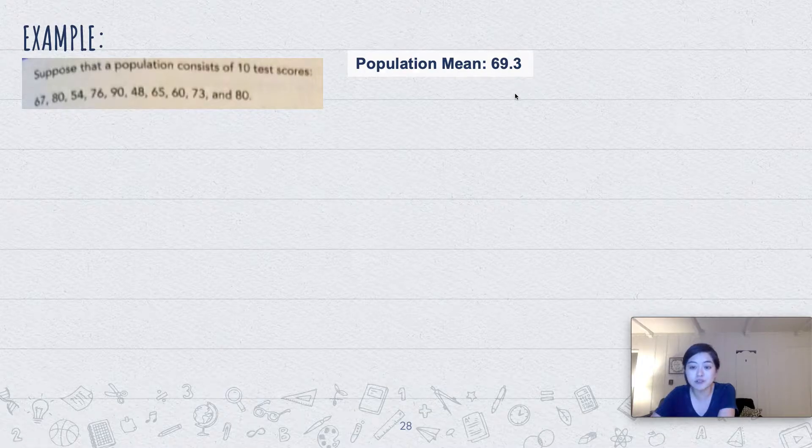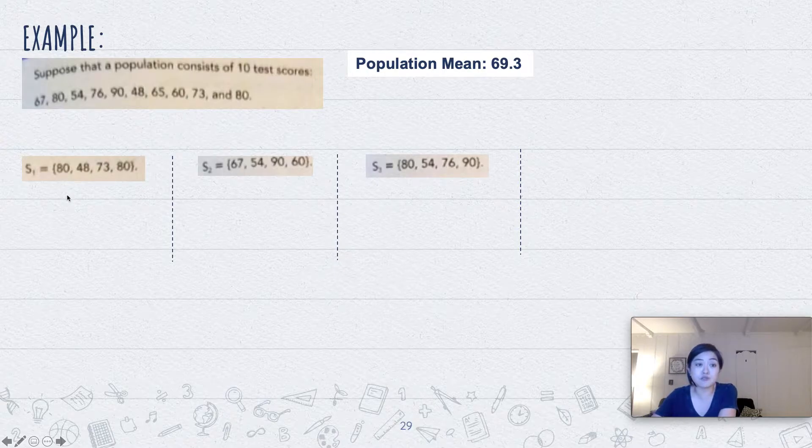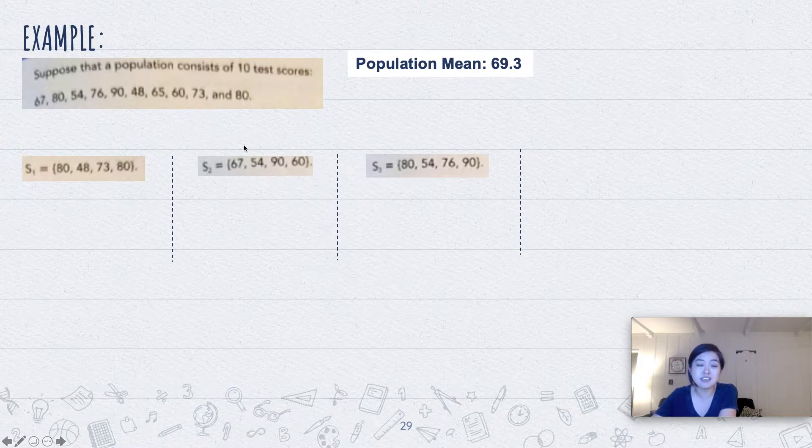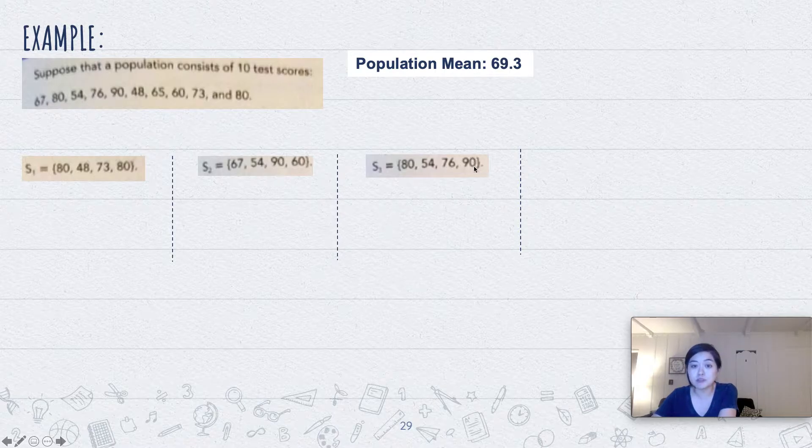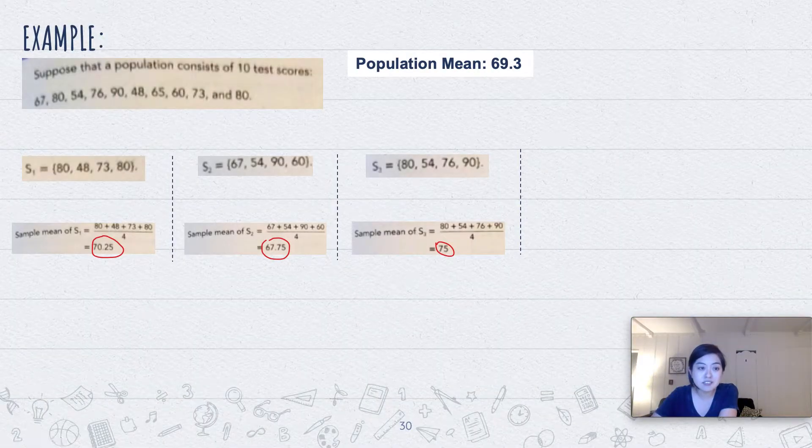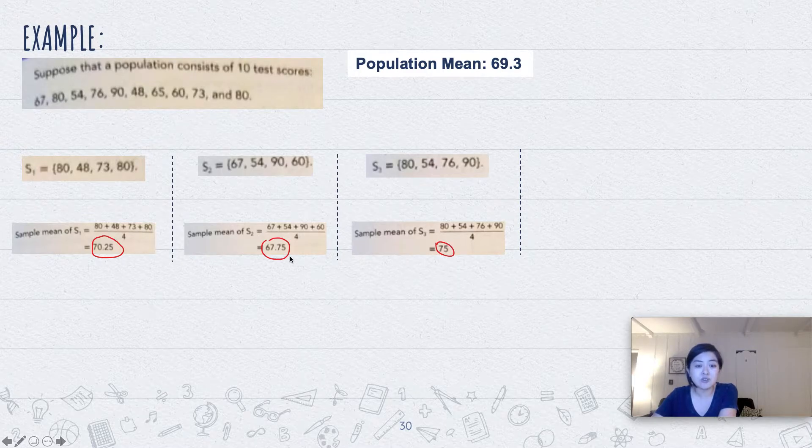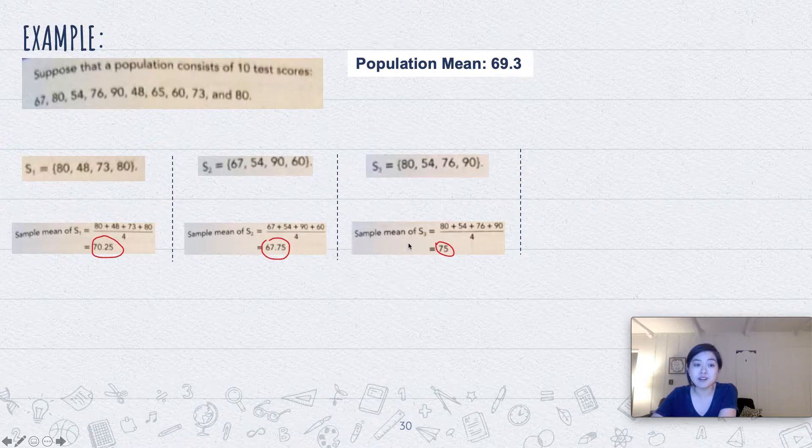Let's try to take some different samples. So four samples, our sample size is four. The first set is 80, 40, 73, and 80 from the actual population. The second set differs slightly, and then the third set differs slightly as well. But there's four different sets of samples from the actual population. Let's find the sample mean. So for the first set it's 70.25, for the second set it's 67.75, for the third set it's 75. Notice the sample means don't are not equal to one another. In fact, are they equal to the population mean?